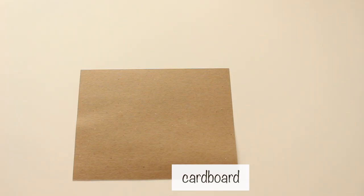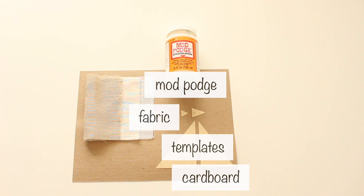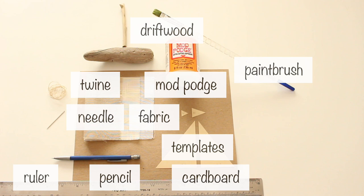For supplies, you'll need cardboard, fabric, templates for your sails, triangle bunting and flag, mod podge, paintbrush, two pieces of driftwood, pencil, twine, needle, ruler, scissors, pliers, wire, drill, nail, and hammer.